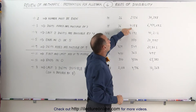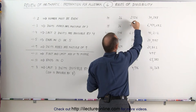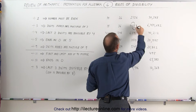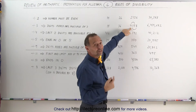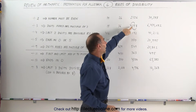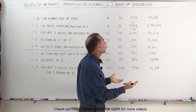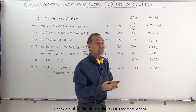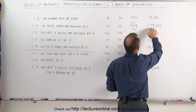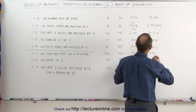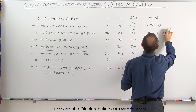How about 4,158? What I can do is add the 4 and the 5 together, and add the 8 and the 1 together. Since 4 plus 5 is 9, which is divisible by 3, and 1 plus 8 is 9, which is divisible by 3, the whole number is divisible by 3. So 4,158 can be divided by 3.